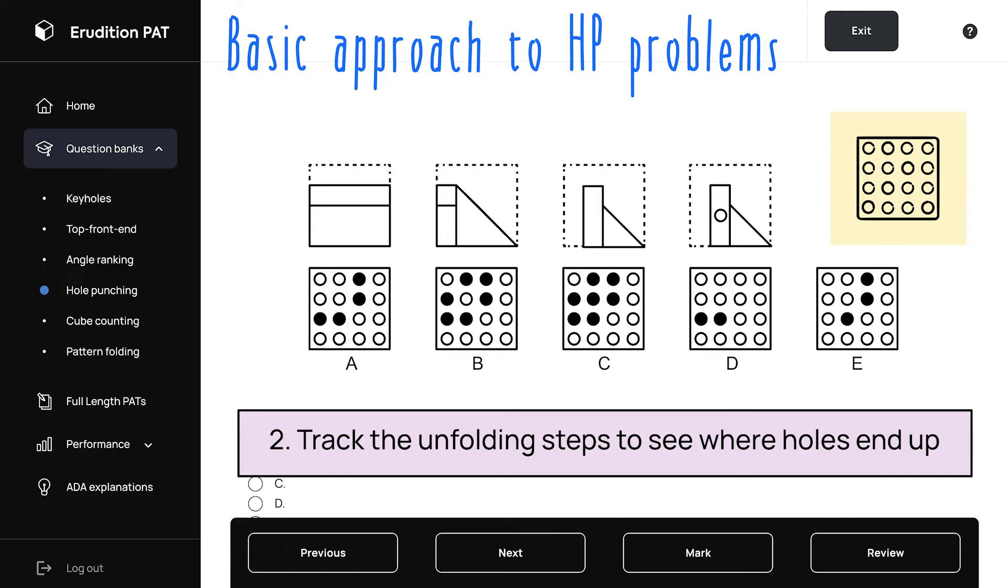So in this problem, we have our initial hole here. On our first step, this hole would be reflected here. And then on this step, this hole would be reflected across this diagonal axis, resulting in this new hole here. And then in our final step, we would have this hole unfolding across here to reveal another hole. And we end up with a full pattern that we can see matches choice A. And it's that simple.